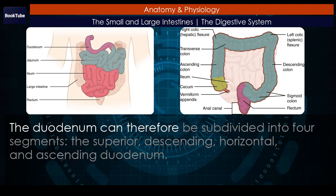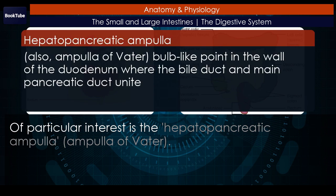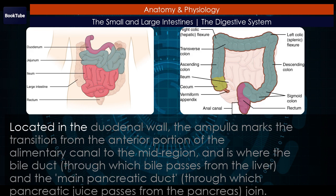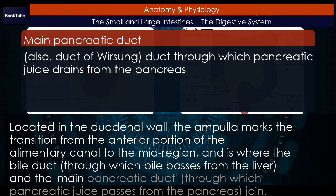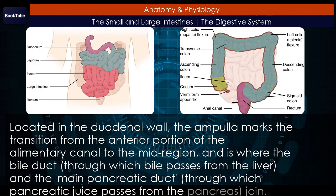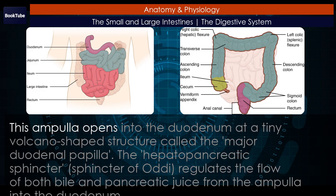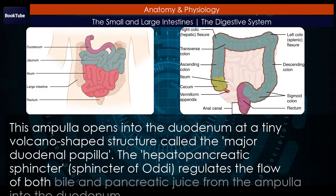The duodenum can be subdivided into four segments: the superior, descending, horizontal, and ascending duodenum. Of particular interest is the hepatopancreatic ampulla (ampulla of Vater), located in the duodenal wall. The ampulla marks the transition from the anterior portion of the alimentary canal to the mid-region, and is where the bile duct — through which bile passes from the liver — and the main pancreatic duct — through which pancreatic juice passes from the pancreas — join. This ampulla opens into the duodenum at a tiny volcano-shaped structure called the major duodenal papilla.